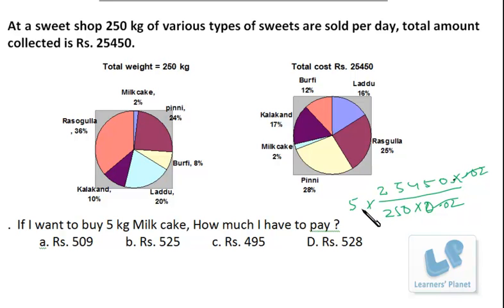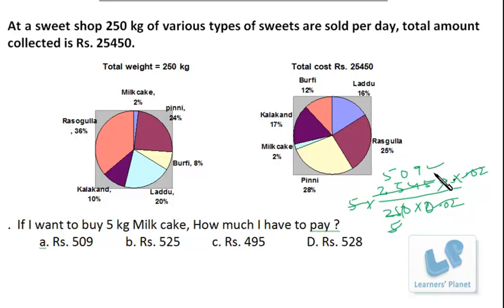If I multiply by 5, I'll get the price of 5 kilograms. It's actually quite simple — you can just divide. There's no need for any shortcuts. The only thing to remember is: do not multiply first, then factorize, then divide — there's no point in doing it that way. So your answer is 509.